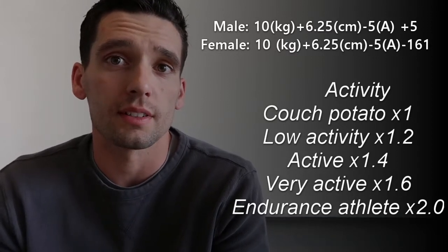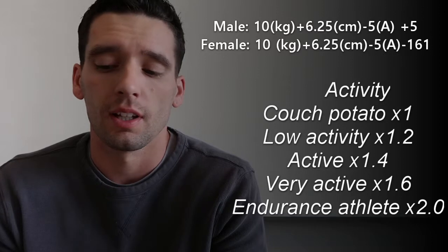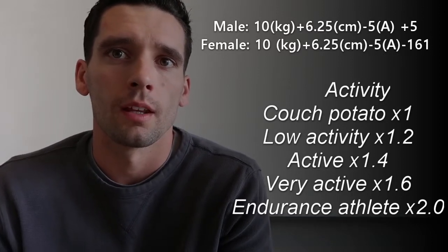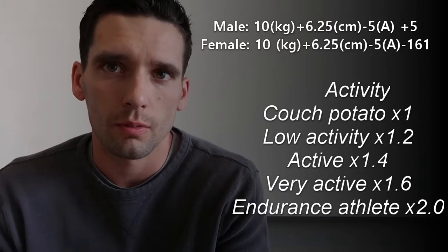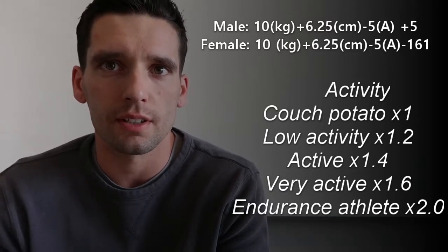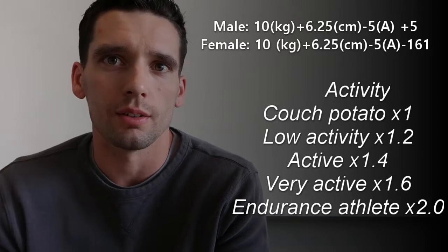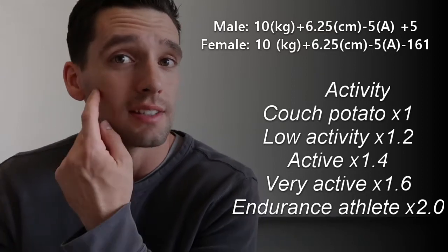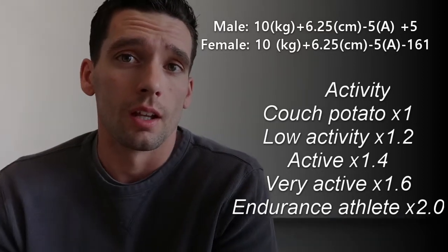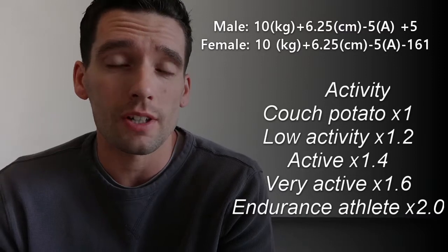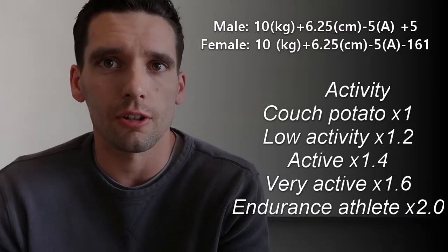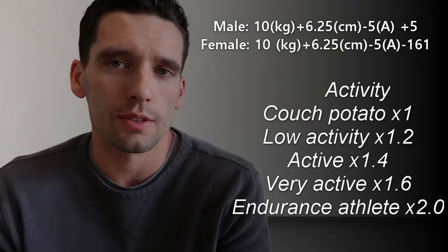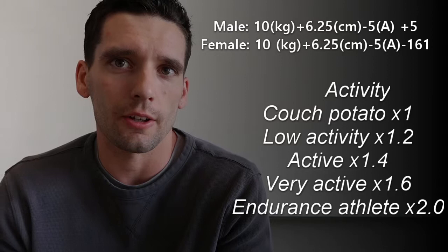One important thing to consider when using these equations is that calories are always an estimate. The calories listed on food packages are an estimate. There are ways to get pretty close, but it's still rough. Similarly, this equation is also an estimate, and the activity multiplier is also an estimate — so the whole thing involves a lot of estimation.